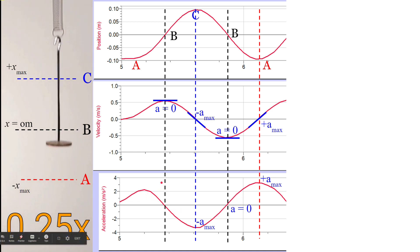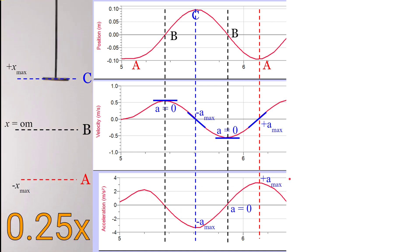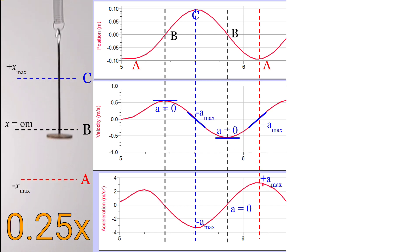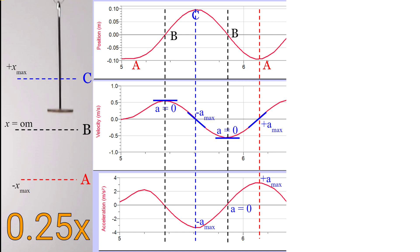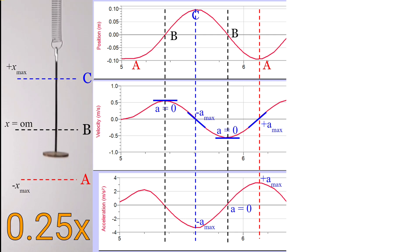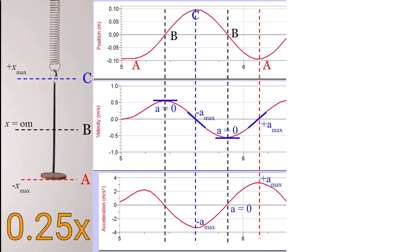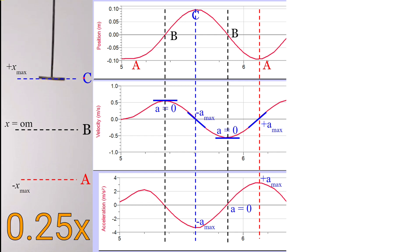We'll explain why when the object passes through equilibrium there's no acceleration, when it's at position C it has its largest negative acceleration, and when it's at position A it has its largest positive acceleration. Remember, acceleration depends on the size of the net force that any object experiences at any given time. Acceleration is equal to the sum of the forces over the mass, or the net force over the mass. So let's look at positions A, B, and C and think about the forces that mass experiences.